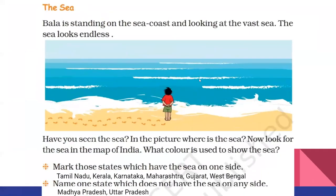Now today we are going to learn the next part of the lesson, which is sea. Bala is standing on the seacoast and looking at the vast sea — the sea looks endless. If you see the sea from the seashore, we see that it is endless. You might have seen the sea many times, going to beaches and enjoying it. Now in this picture, the sea is in front of the boy.